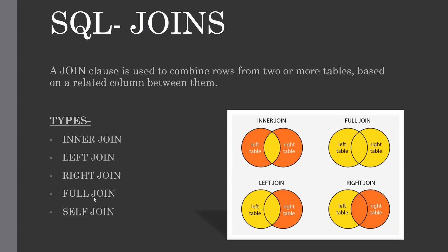These are the different types of joins present in SQL. Let me explain them one by one. Inner join returns rows when there is a match in both tables. Left join returns all rows from the left table even if there are no matches in the right table. Right join returns all rows from the right table even if there are no matches in the left table. Full join returns rows when there is a match in one of the tables.